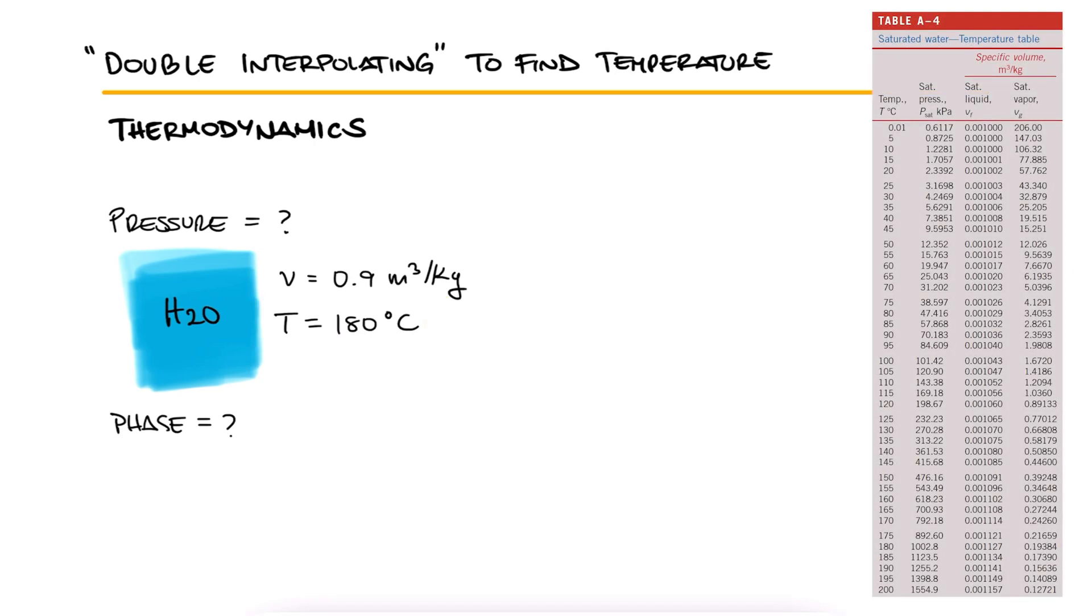We find here that for a temperature of 180 degrees Celsius, Vg is 0.19, which means that our water, which has a higher specific volume, is in a superheated phase.